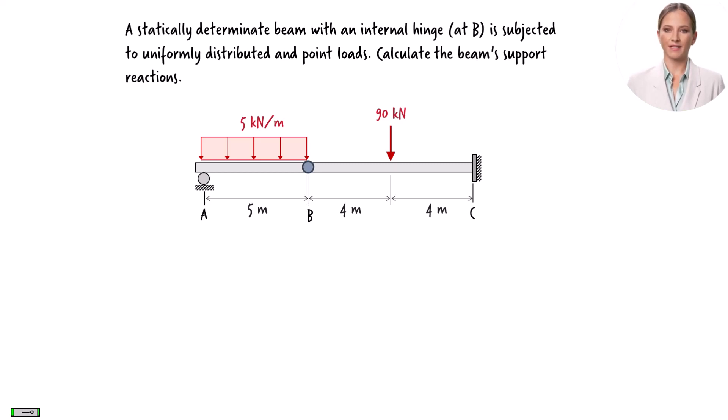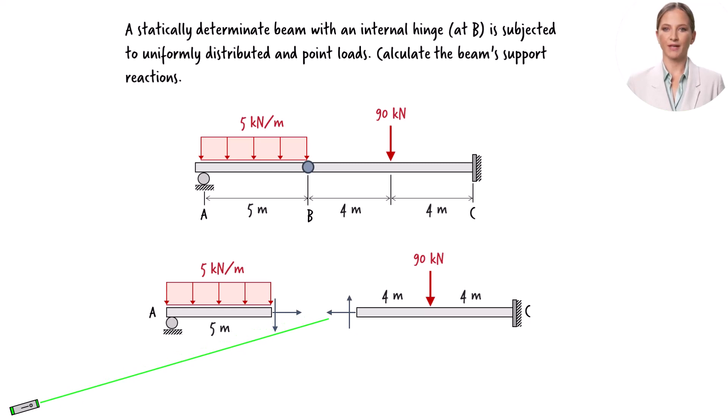Let's split the beam at the hinge and show its internal forces. At the hinge, there is an axial force and a shear force. To accurately represent these internal forces, we must show them acting at the left and right sides of the hinge. The two axial forces must be shown in opposing directions. If one is oriented to the left, the other should be directed to the right.